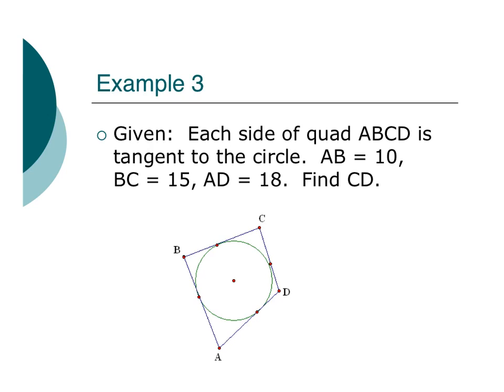So this is called a walk-around problem. Kind of tricky when you don't know what to do. But again, this is one of those problems that will be similar to solve each time, just like our first example with the two concentric circles. So each side of a quadrilateral ABCD is tangent to the circle. AB is 10, BC is 15, and AD is 18. And we want to find CD.